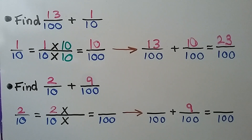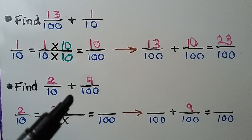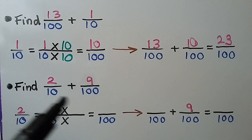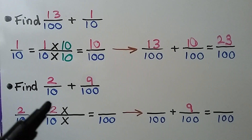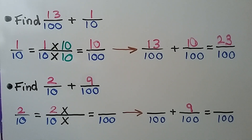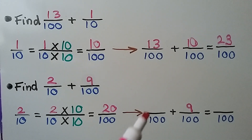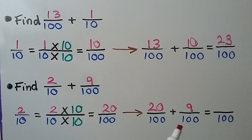Now we need to find 2 tenths plus 9 hundredths. We need to give them the same denominator of 100, so we multiply the numerator and denominator of 2 tenths by 10. Now we have 20 hundredths, so we can write 20 hundredths and add 9 hundredths. It will equal 29 hundredths.